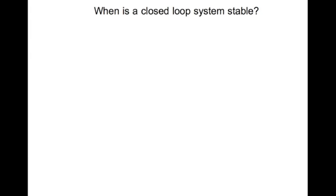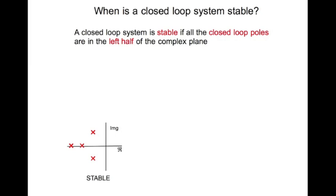So the question is: when is a closed-loop system stable? A closed-loop system is stable if all closed-loop poles are in the left half plane. Here I have an illustration of the closed-loop poles in the complex plane, and all poles are in the left half plane — therefore this system is stable. Mind you, these are closed-loop poles, not just any poles.